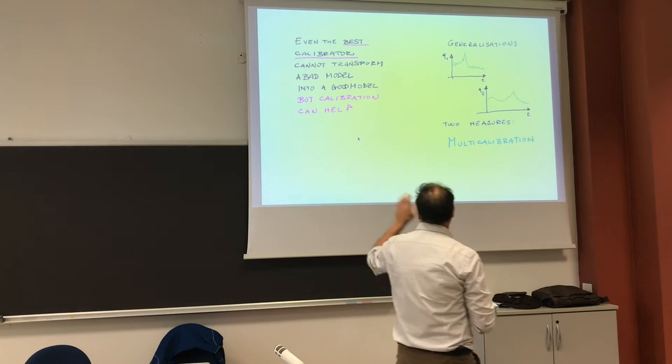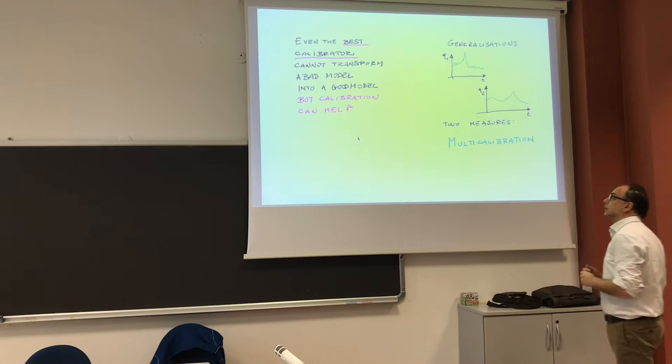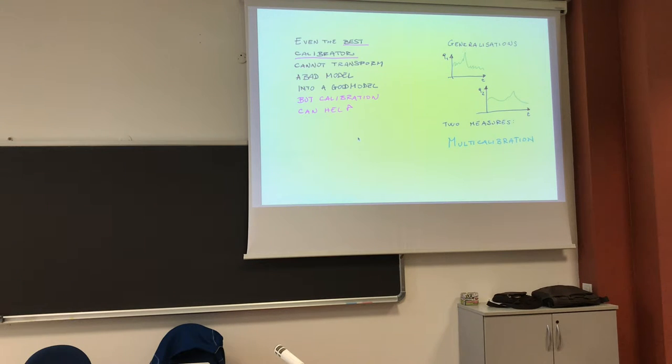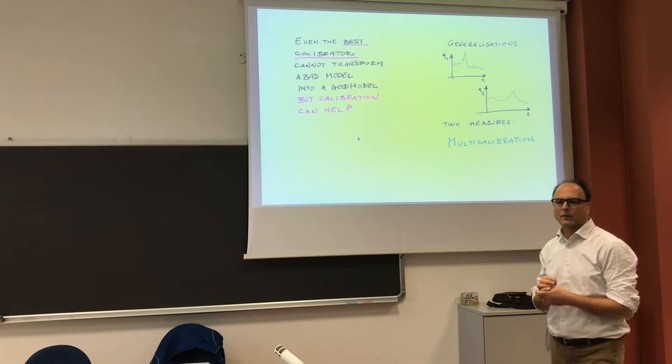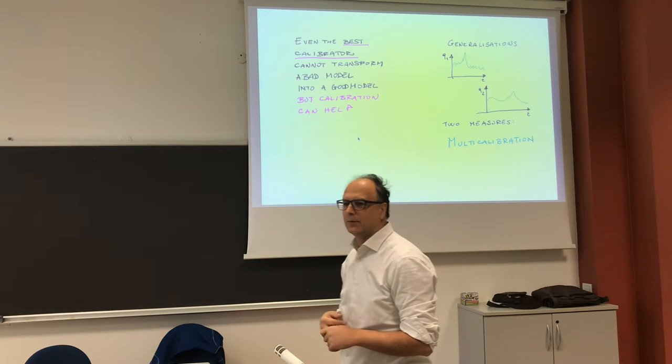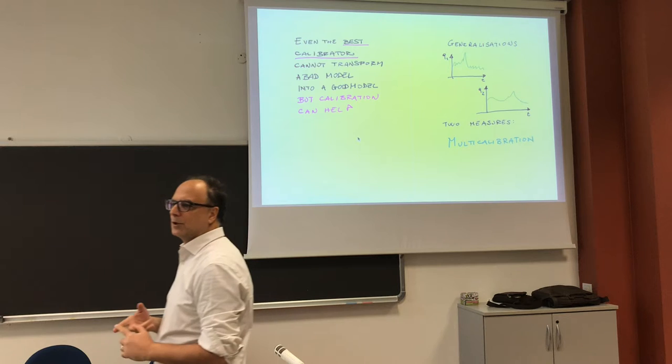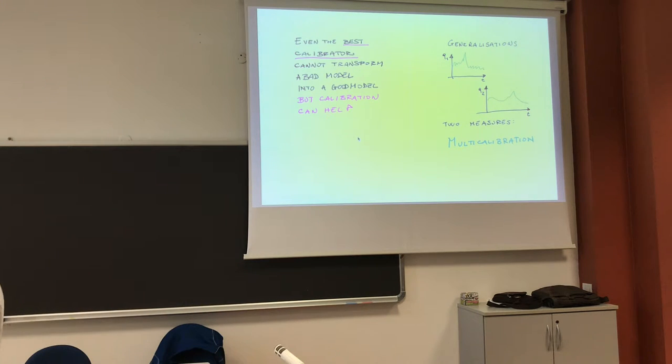We have also some generalizations about calibrators. One is, for instance, we have two measurements. Let's say we have two quantities. For instance, we have a model that gives us at the same time discharge and evapotranspiration. And we are so lucky that we have measurements on both discharge and evapotranspiration. And we want to fit our model in order to give the best results in the two cases.